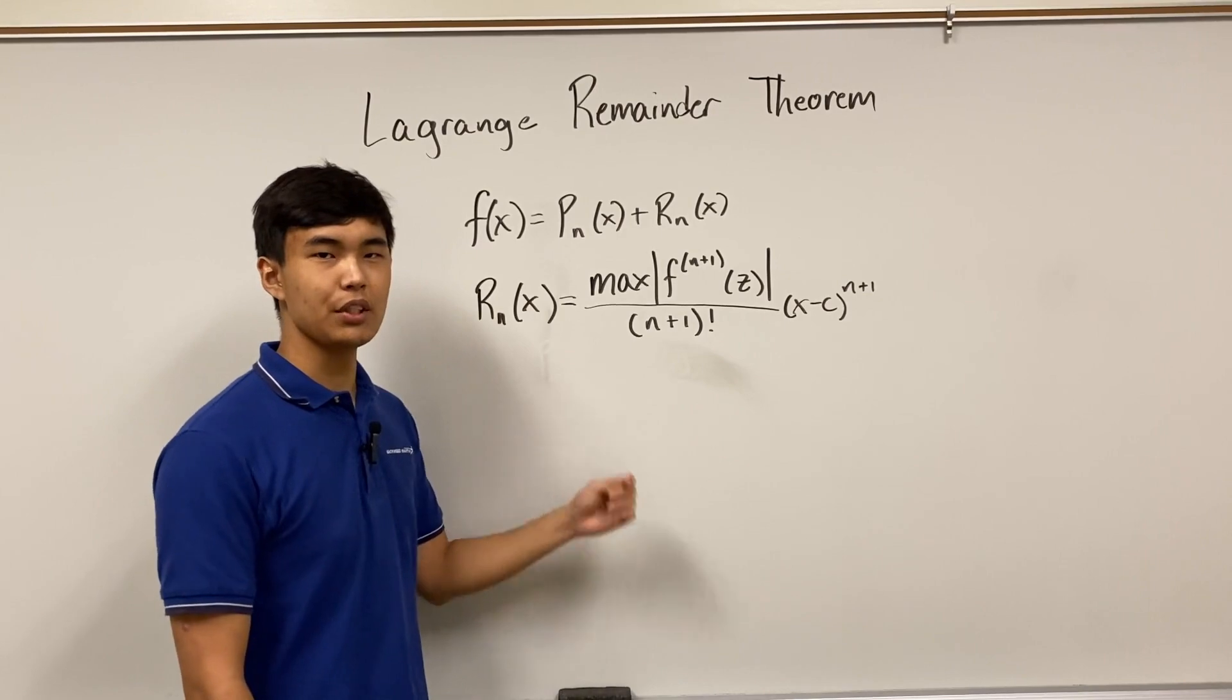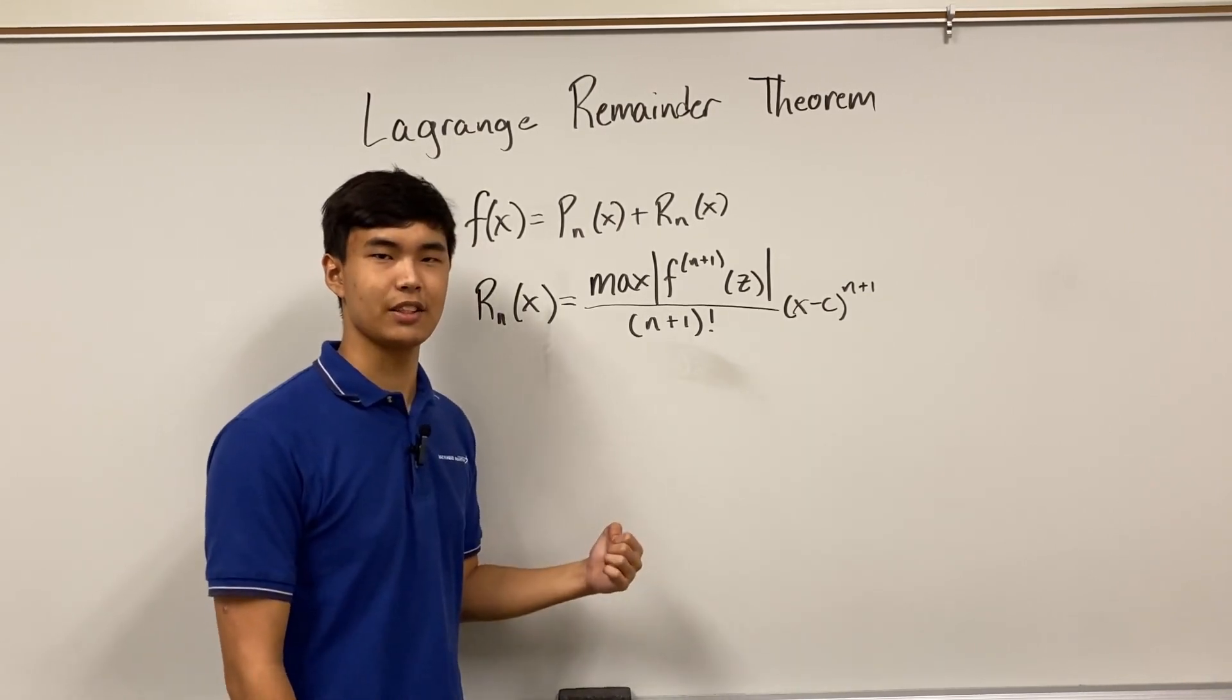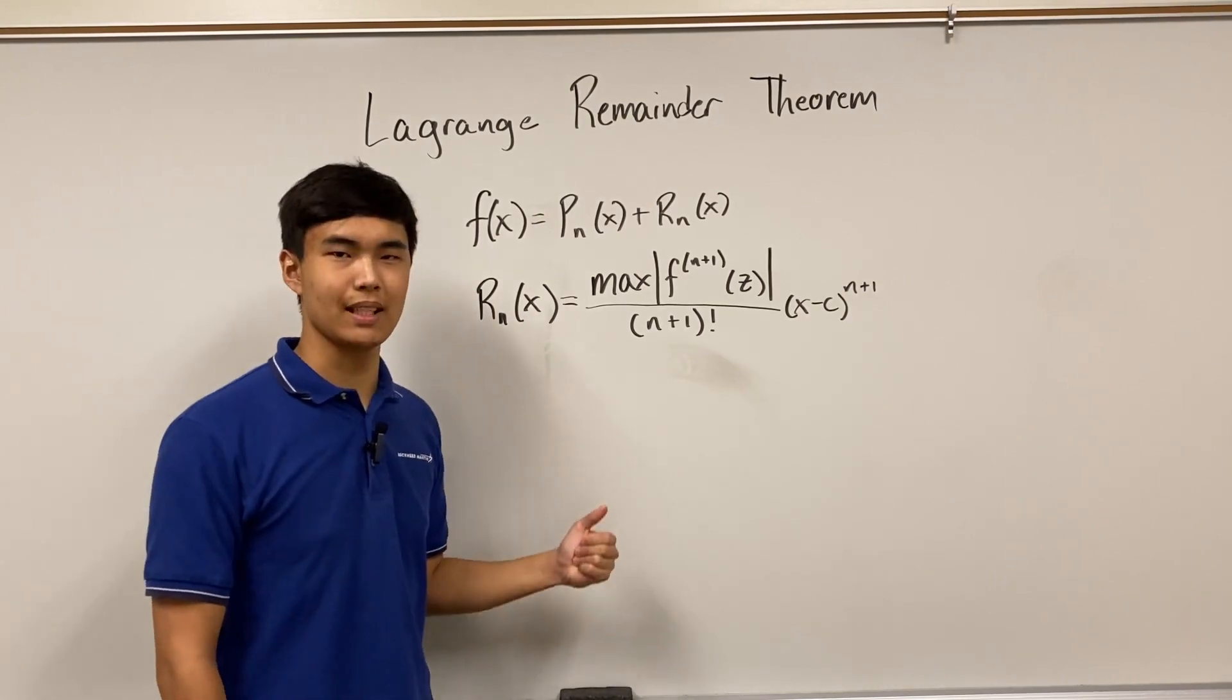This remainder is usually only used when you're trying to find the error in approximating a function value using a Taylor series. This is a pretty complex expression, so we're going to break it down step by step.